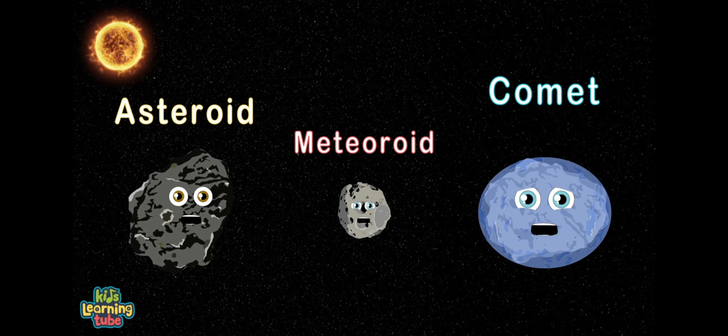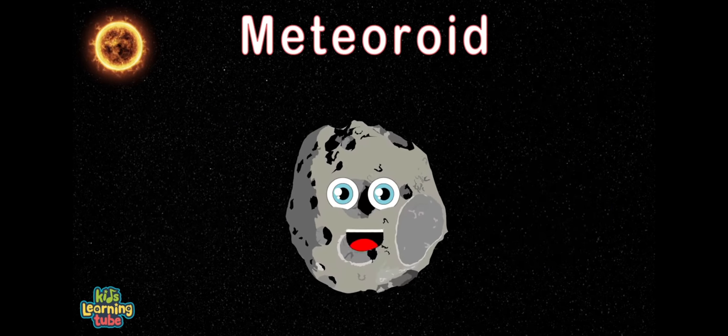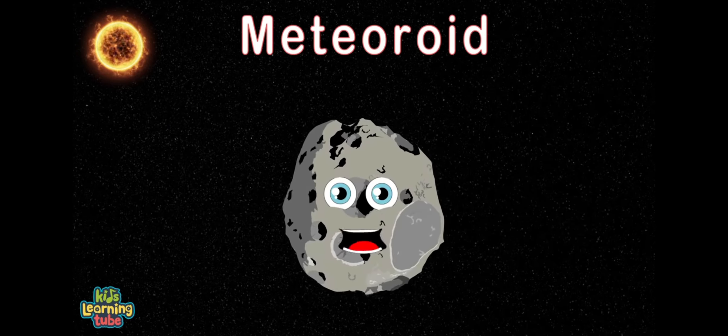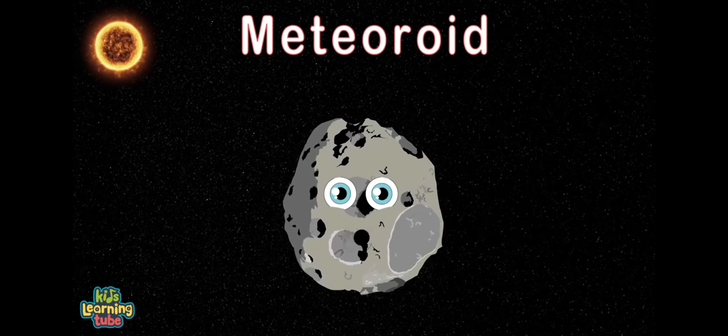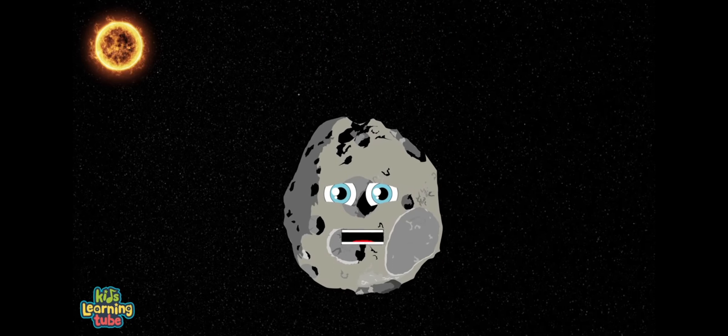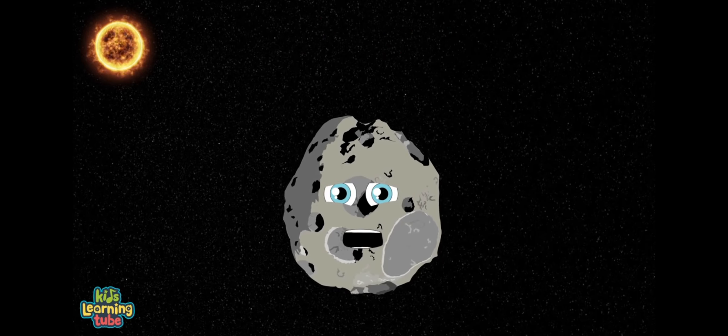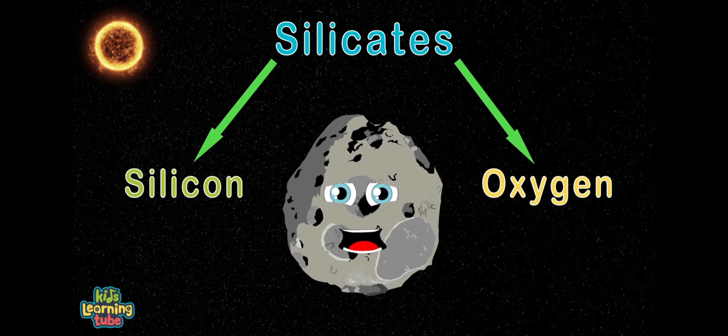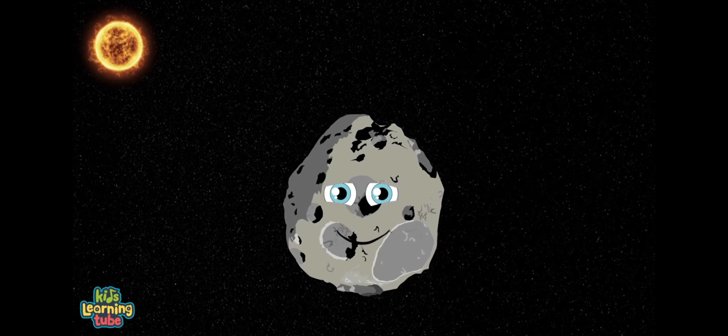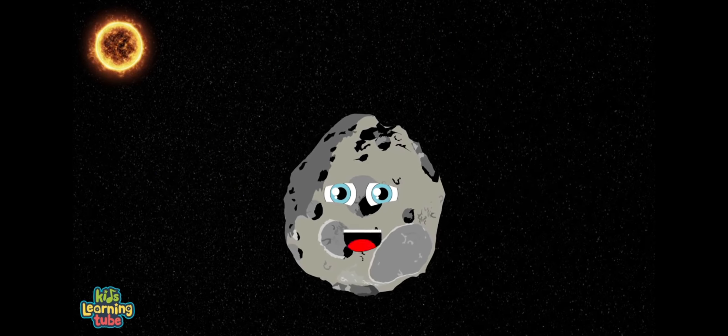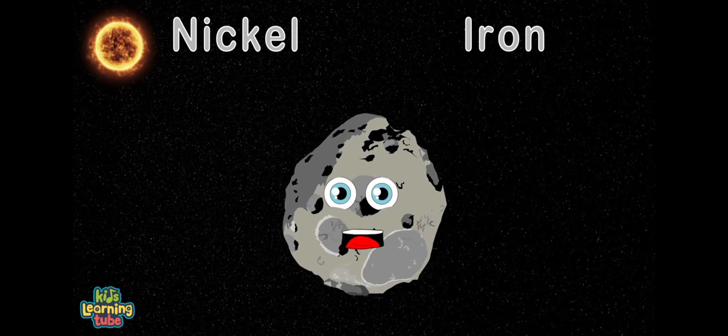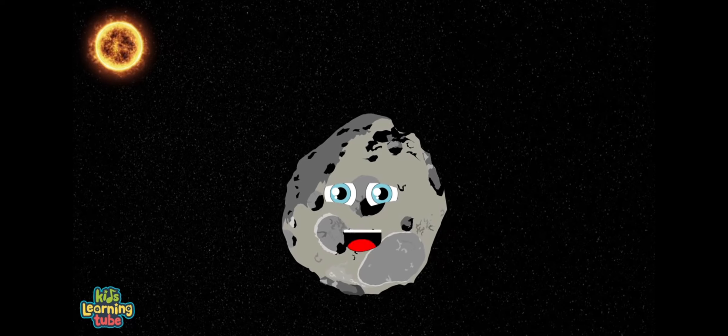I'm a meteoroid. I'm smaller than an asteroid, you see. My size can range from a grain of dust to a small asteroid. I orbit the sun. I'm made of minerals called silicates, which is silicon and oxygen. I'm also made of heavier metals like nickel and iron. Let's go explore a little more about what other names I can become.